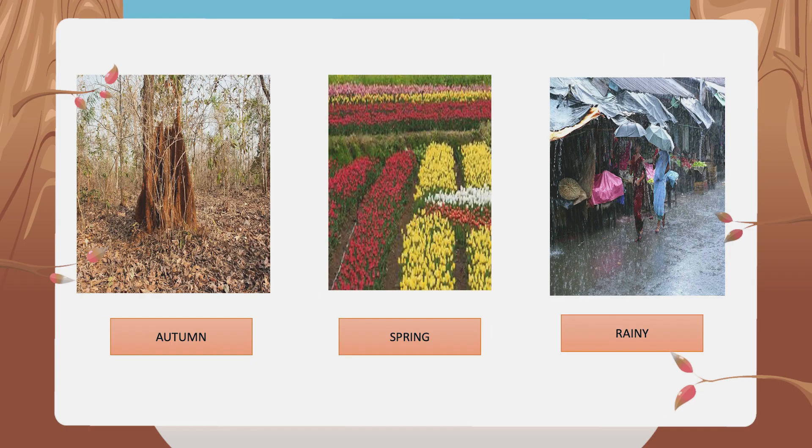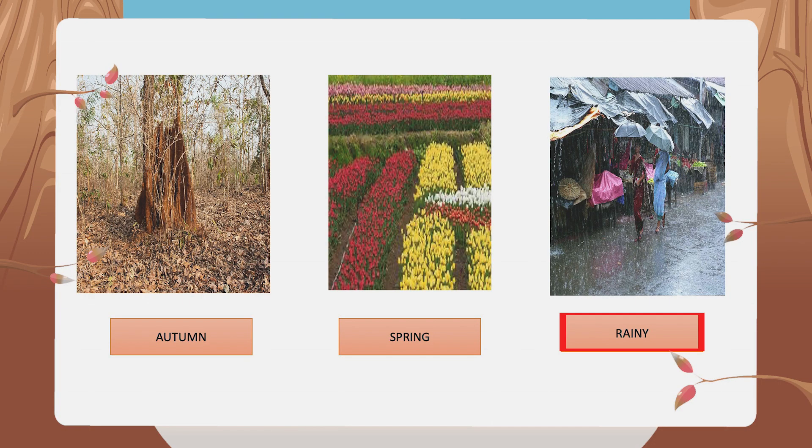The second picture shows the spring season. It is the season between winter and summer — neither cold nor hot. We can see flowers all around and trees have new leaves. It is the most colorful season of the year. The third picture shows the rainy season, known as monsoon in India. It is the wettest time of the year because it rains from time to time.